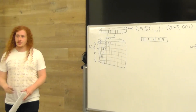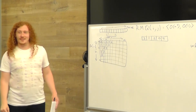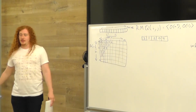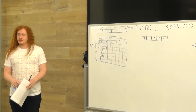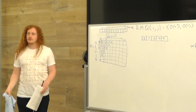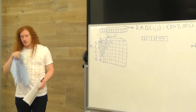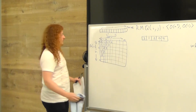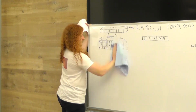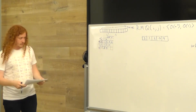We did it — order N squared preprocessing and order one query time. We'll go home, right? Not so fast — I wouldn't have written 'naive' if there wasn't more. What can we do that's less expensive? You have structure you're not taking advantage of. We have logs — let's try logs.